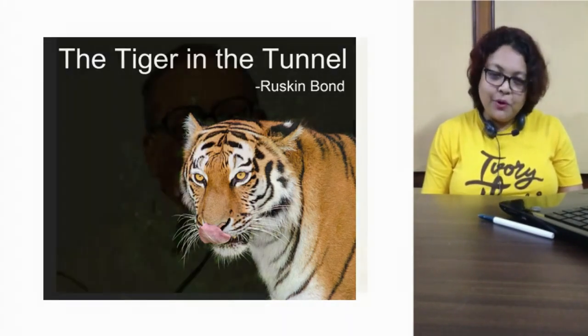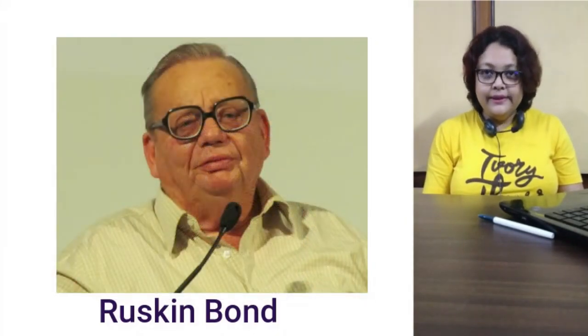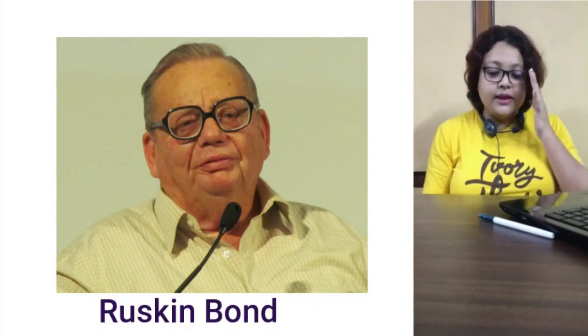Ruskin Bond was born on 19th May 1934 — before India got independence — at Kassoli, to parents Edith Clark and Aubrey Bond. He was a person of British descent. He received the Sahitya Akademi Award and is mostly famous for his writings in the category of children's literature. In his writings we get a flavor of Indian hill stations, especially places like Dehradun and forest areas, and the lives of very simple people who live there.